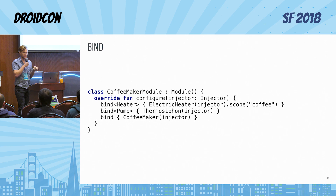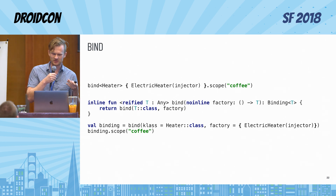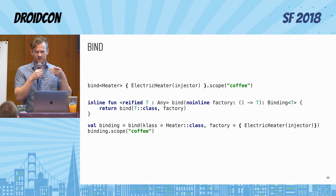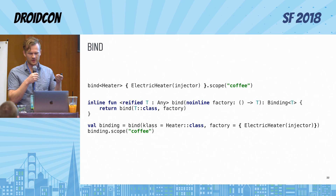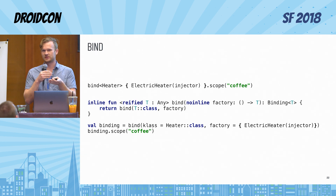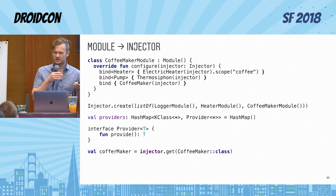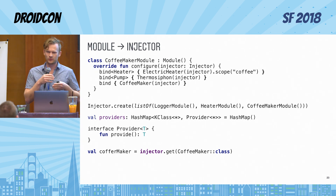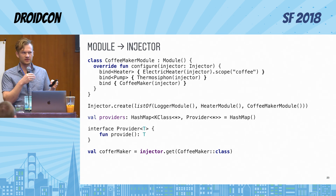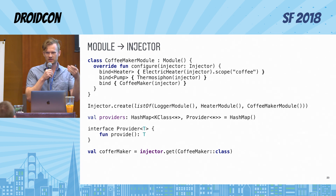The same technique applies to the bind method. Bind is also an inline function, and the full version looks like a bind call where you supply your class name and a factory method to resolve the instance. In addition you can specify that this particular binding needs to be scoped. Modules provide a set of those bindings, and when you put them into injector the bindings are transformed into providers. The difference between a binding and a provider is that a provider is a specific factory that knows whether the instance has to be resolved over and over again or cached by the scope.